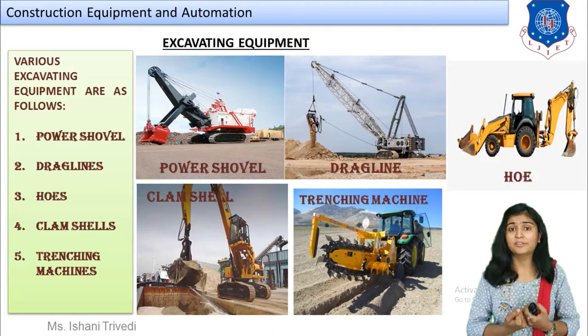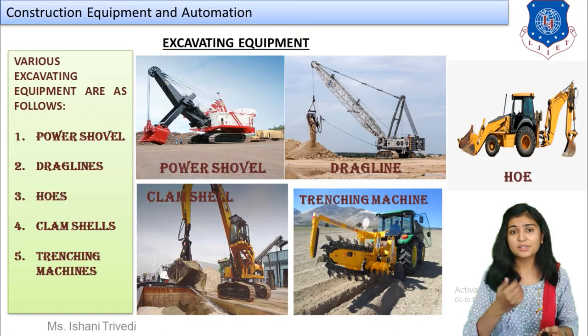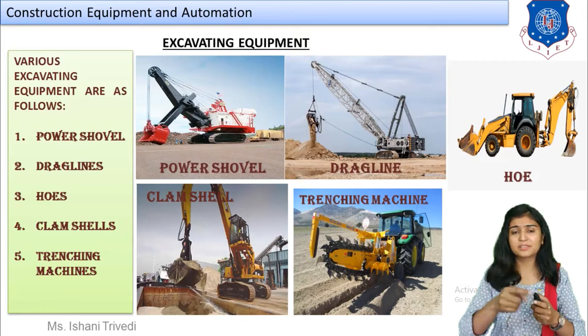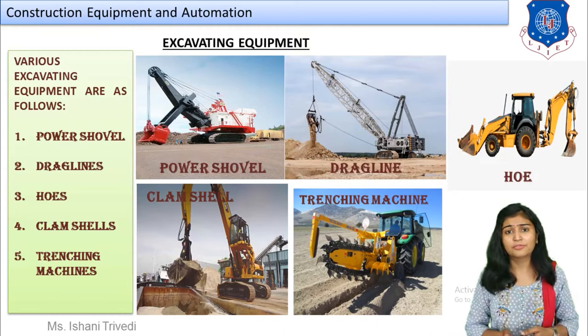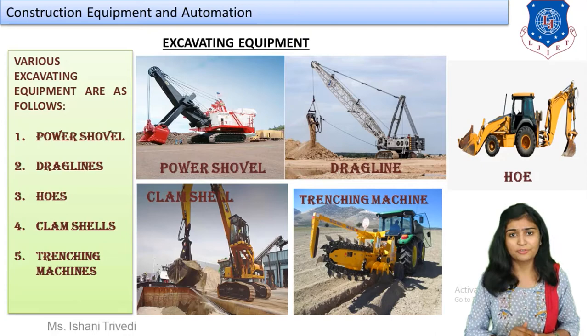The fifth type is the trenching machine — used specifically for laying foundation trenches. You can see it has a full circular blade mounted with sharp edges. As it moves through the soil, it lays foundation trenches. These are the five major types of excavating equipment.